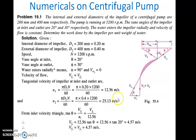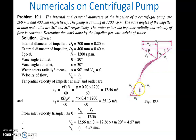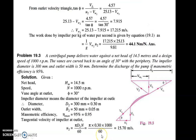From the inlet velocity triangle, U1 is known and keta is known. So tan(keta) = Vf1 upon U1. Therefore Vf1 = U1 × tan(keta) = 12.56 × tan(20°) = 4.57 m/s. Since Vf1 = Vf2, we have Vf2 = 4.57 m/s as well.